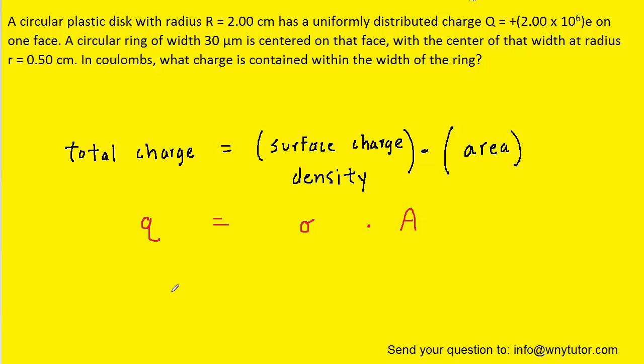In terms of units, we know that charge is measured in coulombs. The surface charge density is measured in coulombs per meter squared. And then area, of course, is in meters squared. So we can see dimensionally that the meters squared would cancel and we would be left with coulombs equaling coulombs.